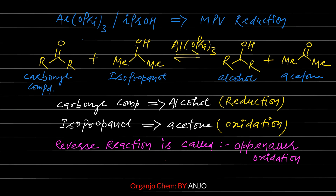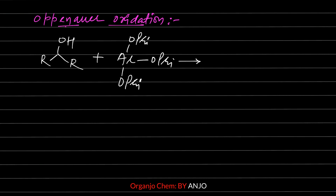The reverse reaction of MPV Reduction is called Oppenauer Oxidation, where acetone in the presence of alcohol reacts with aluminum isopropoxide to form the carbonyl compound and isopropanol.